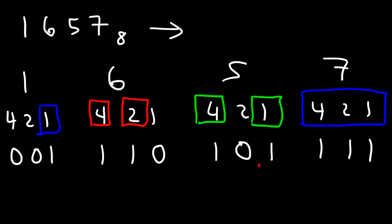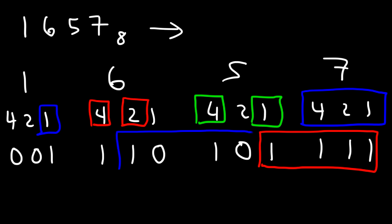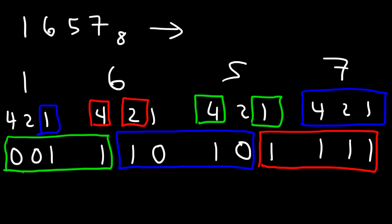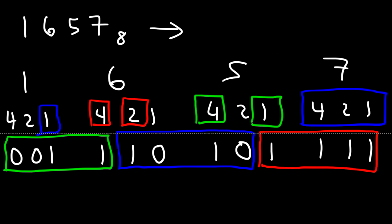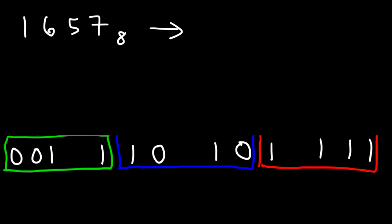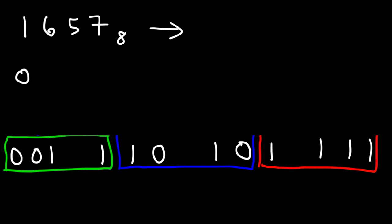Now let's break this up into groups of 4. Here's the first group of 4, here is the second group of 4, and here is the third group of 4, which works out nicely in this case. So we have 0, 0, 1, 1 — then 1, 0, 1, 0 — and then 1, 1, 1, 1.